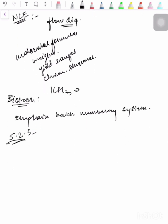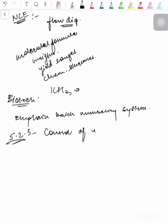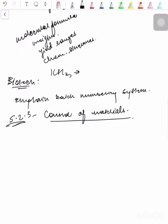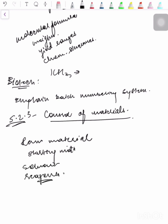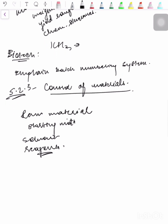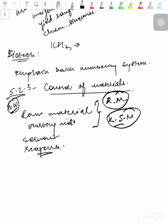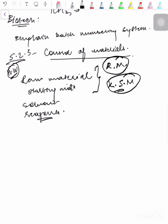The next subsection is 3.2.S.2.3, control of materials. Materials used in the manufacture of the drug substance — such as raw materials, starting materials, solvents, reagents, and catalysts — should all be listed, identifying where each material is used in the process. As a homework exercise, define what is meant by raw material and key starting materials (KSMs) in the comment box below.